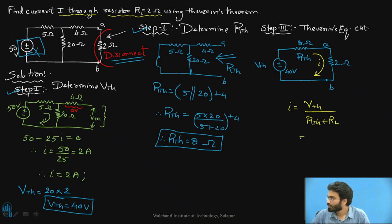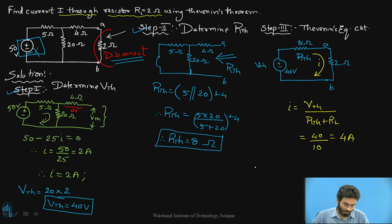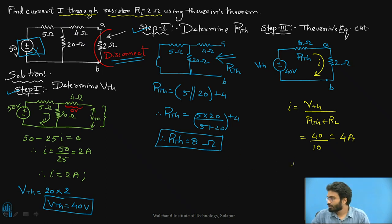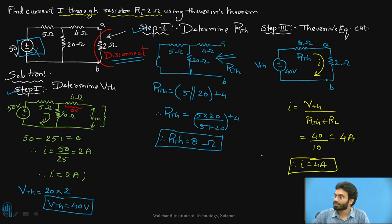This gives us 40 divided by 8 plus 2, that is 40 divided by 10, which equals 4 amps. So the final answer is 4 amperes. This is how we calculate the Thevenin's equivalent circuit.